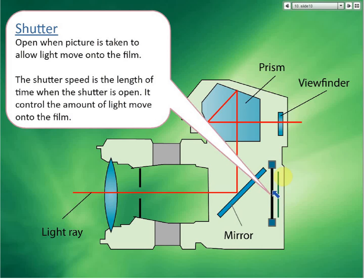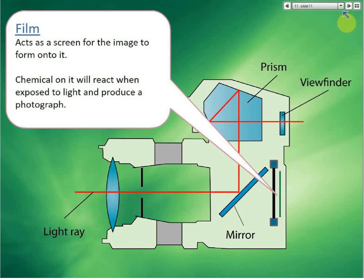Then we have the film. It acts as a screen for the image — the chemicals react when exposed to light and produce a photograph. This applies to film cameras. Nowadays, if you use a digital camera, there is no film but a digital sensor instead.